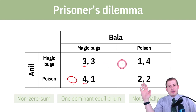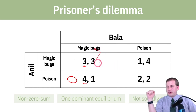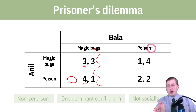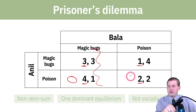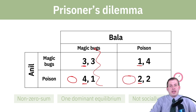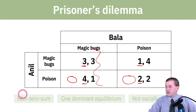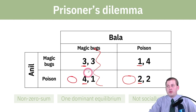Cover up the magic bugs column. If you're Anil and you know Bala is going to use the poison insecticide, you could get one util using magic bugs or two utils using poison. So you end up using the bad insecticide because that's best for you. That's what we have for Anil: he's always going to poison regardless of what Bala chooses. He has a dominant strategy.